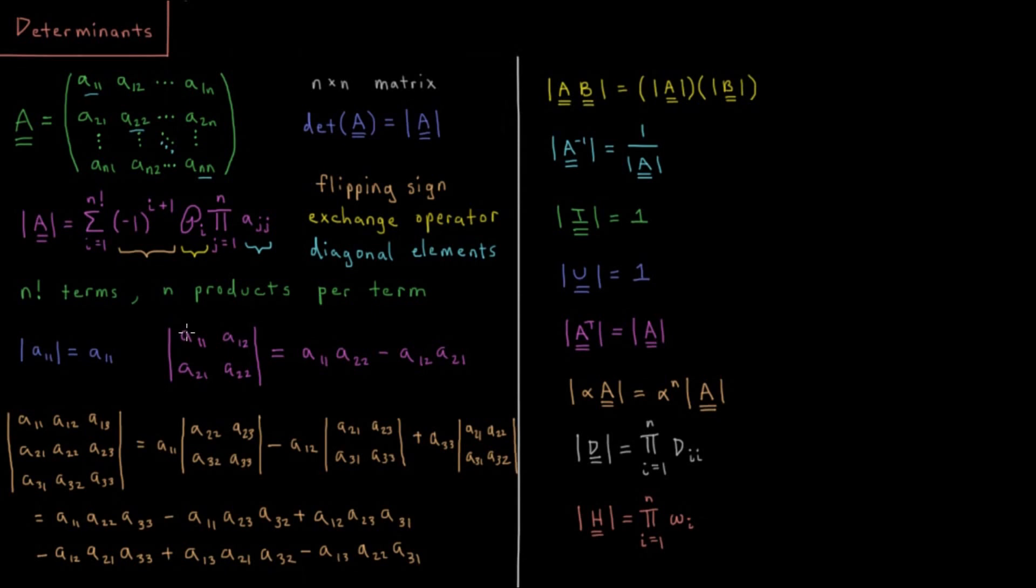That's A11 times A22, the diagonal product, minus A12 times A21. Because if we exchange column one and column two, now A12 and A21 are the diagonal. And we've done this negative one here as we went. So we did an odd number of exchanges to get there. So we get a negative sign. And we did an even number of exchanges, zero exchanges to get this ordering. So we have a positive sign, A11, A22 minus A12, A21.